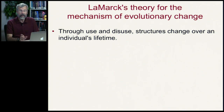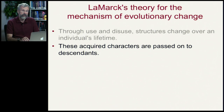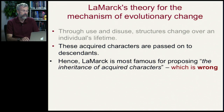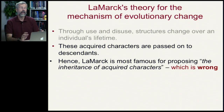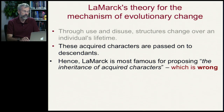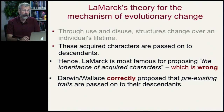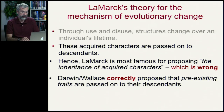We saw that can happen — you can pump iron and get muscles. But then he said these acquired characters are passed on to descendants. Lamarck is most famous for proposing the inheritance of acquired characters, and this we know is wrong. Darwin and Wallace, on the other hand, correctly proposed that pre-existing traits are passed on to their descendants.